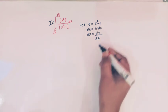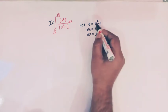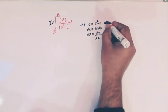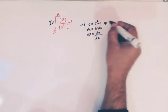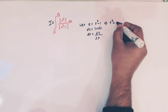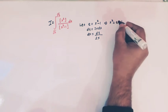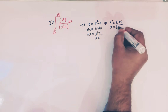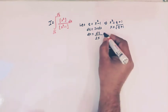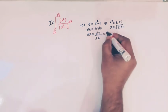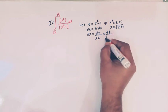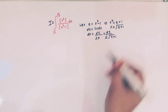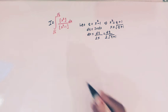Now we have to express x in terms of t. From the substitution we have x square equal to t plus 1, and x equal to square root of t plus 1. Therefore dx is equal to dt over 2 times square root of t plus 1.